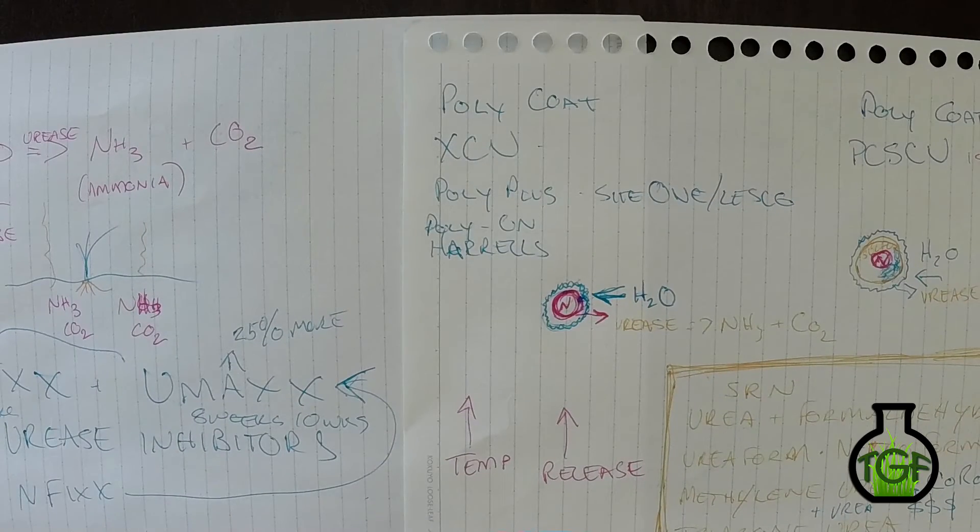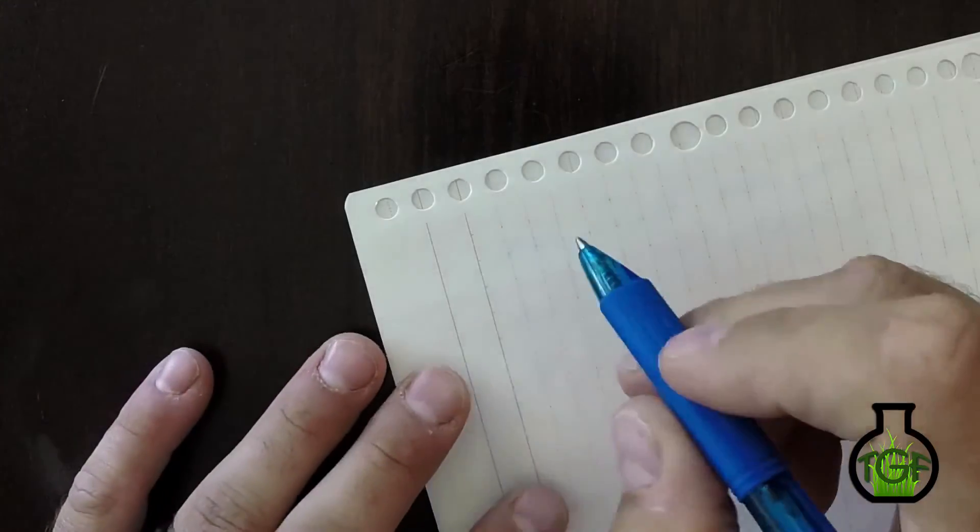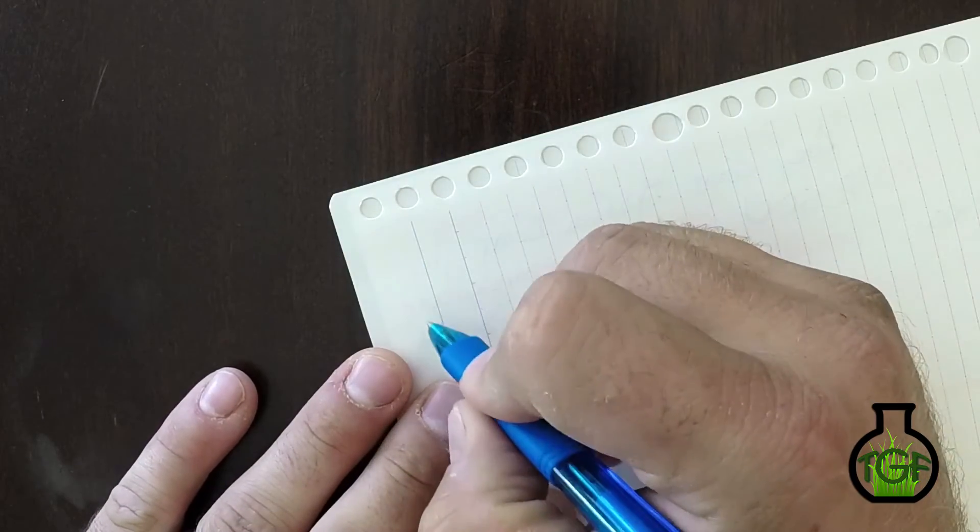And then I want to say Duration also has a 60, and I want to say they may have a 90—Duration 90—that's three months, that's 12 weeks. Again, the longer the release you get out of it, the more expensive the product is going to be. So anyway, these are our forms of urea fertilizers here. And the last fertilizer I want to talk about is Lebanon's Turf—Lebanon Turf—they have a product called MESA.